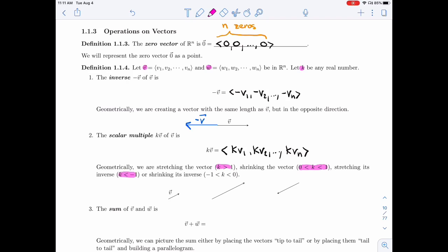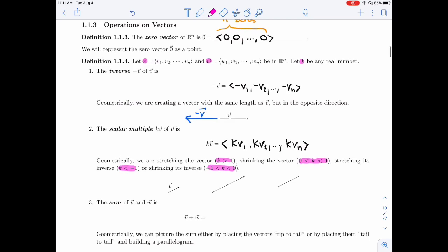And then for negative ones, I'm going to be doing the same thing, but to the inverse. So K less than minus 1 is stretching the inverse, and K between minus 1 and 0 is shrinking the inverse.